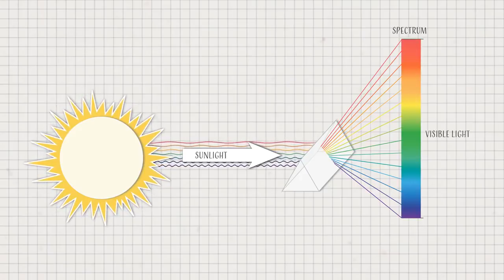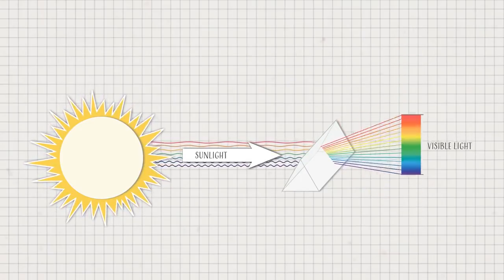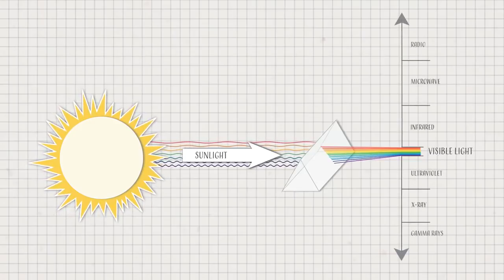Visible light appears to our eyes as the colors of the rainbow, but beyond visible light there are many wavelengths we cannot see.